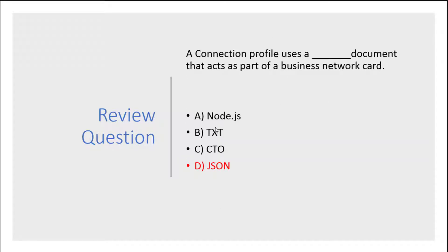A connection profile uses a blank document that acts as part of a business network card. It's not any of the three options listed — it is actually a JSON document that's used.